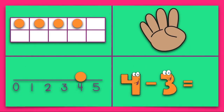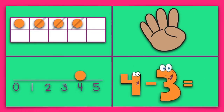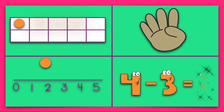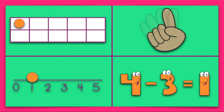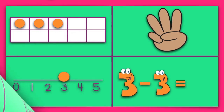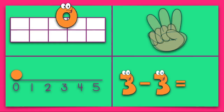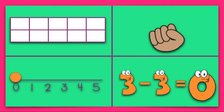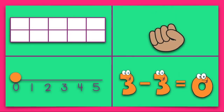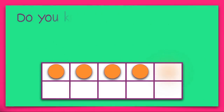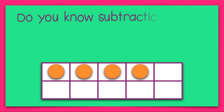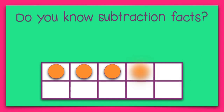4 minus 3 equals 1. 3 minus 3 equals 0. Do you know subtraction facts?